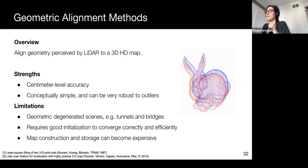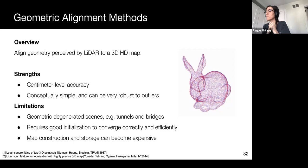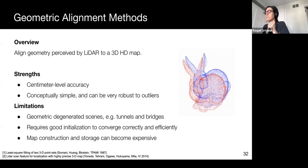Geometric alignment methods rely on aligning 3D sensor data to preview 3D HD maps. These methods can be very accurate, relying on well-established, conceptually simple methods that can be robust to outliers, such as the iterative closest point algorithm.